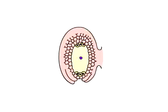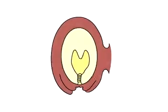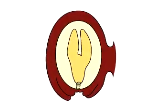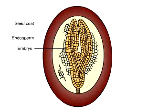Taking food through its stalk, the developing seed expands its endosperm and embryo. When the embryo is mature and dormant, the integuments develop into a protective seed coat and detach from the ovary wall.